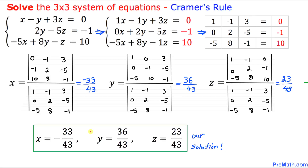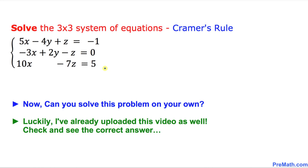Our solution is: x equals negative 33 over 43, y equals 36 over 43, and z equals 23 over 43. That is our answer. Now here is your assignment — can you do it on your own? I have already uploaded that video as well, so please go ahead and check it out for the correct answer. Thanks for watching, and please don't forget to subscribe to my channel for more exciting videos.